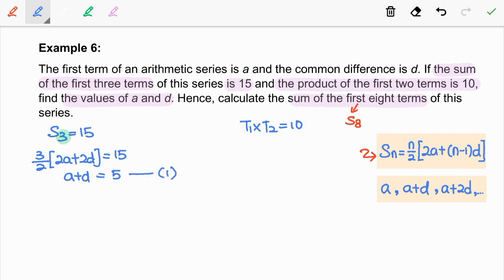Next, we know that the arithmetic sequence is a sequence of the form A, A plus D, A plus 2D, and so on. So here, we clearly see that A is our first term, and A plus D is our second term. So we take A times A plus D, and this is equal to 10. So this is our second equation.